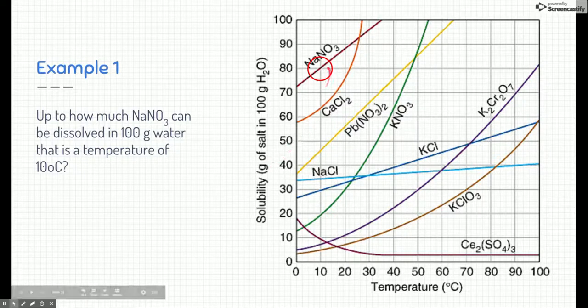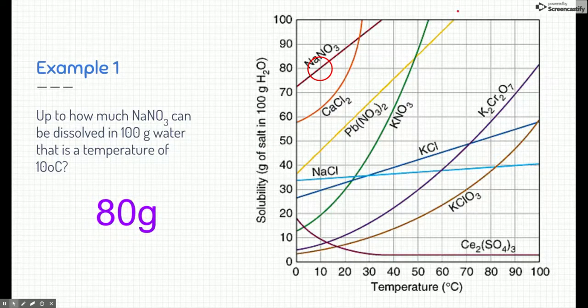And so it says here that I can dissolve 80 grams of sodium nitrate in 100 grams of water for it to be saturated. That's the total amount I can dissolve before it stops dissolving. So 80 grams is our answer.